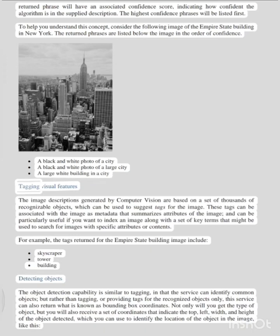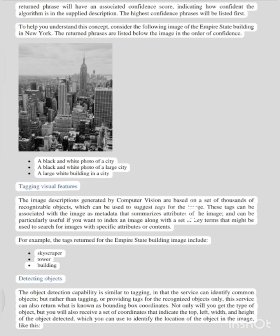Tagging visual features: the image descriptions generated by computer vision are based on a set of thousands of recognizable objects, which can be used to suggest tags for the image. These tags can be associated with the image as metadata that summarizes attributes of the image, and can be particularly useful if you want to index an image along with a set of key terms that might be used to search for images with specific attributes or contents.